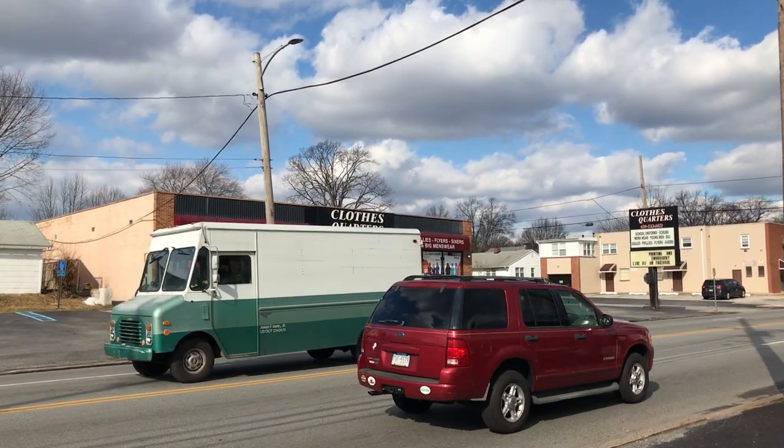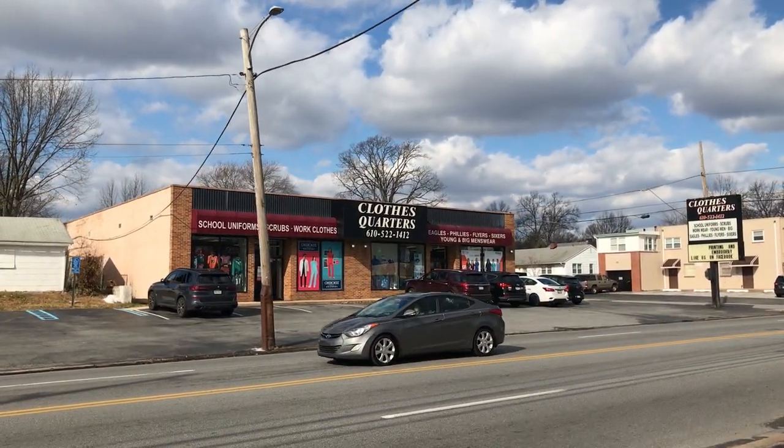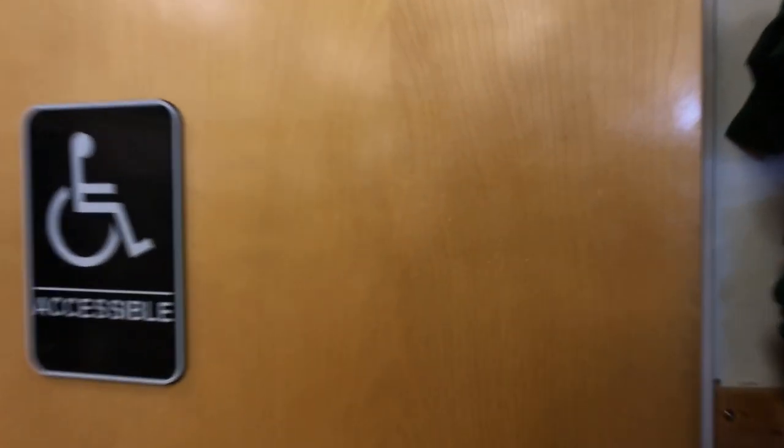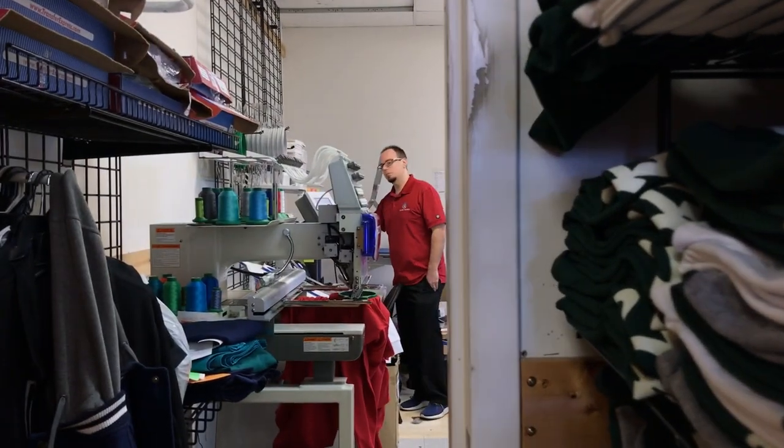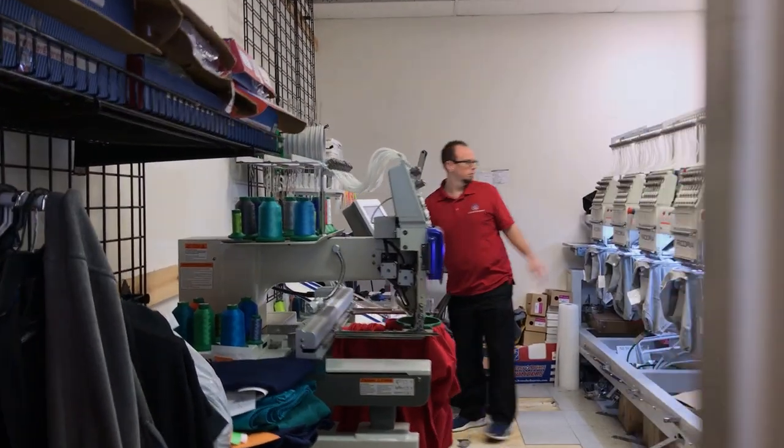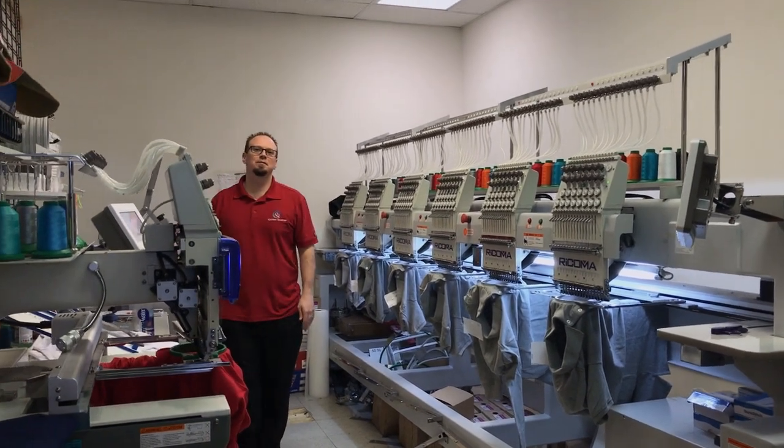My name is John Hall and I embroider at Closed Quarters. I have been doing it for about six years. I'm the only one that does all the embroidery stuff. People take the orders and then I get the clothes that need to be embroidered, and I'm the only one here that can do that.